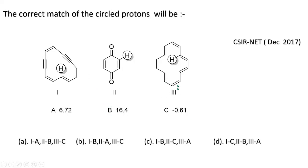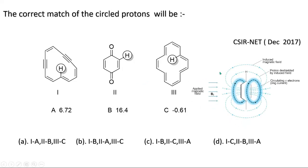For compound three, counting the π electrons: one, two, three, four, five, six, seven — 14 π electrons, which makes it aromatic by Hückel's rule. Aromatic compounds produce a diamagnetic π electron ring current: outer protons are much more deshielded, and the inner region is a shielding region. That's why this inner proton resonates at around −0.61 ppm. So option B is the correct answer.